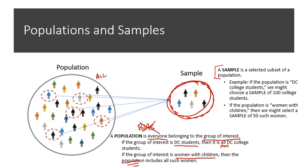An example, if the population is Diné College students, we might choose a sample of 100 college students. If the population is women with children, we might select a sample of 50 such women.